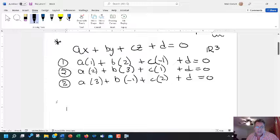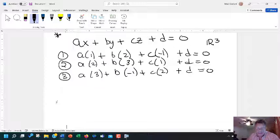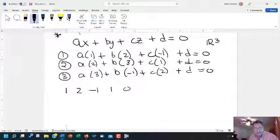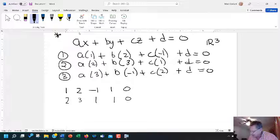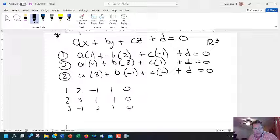My first equation will be A(1) plus B(2) plus C(-1) plus D equals 0. My second equation will be A(2) plus B(3) plus C(1) plus D equals 0. And my third equation is going to be A(3) plus B(-1) plus C(2) plus D equals 0. So that gives me this set of linear equations using those three points. What I can do is translate these three equations to an augmented matrix system.